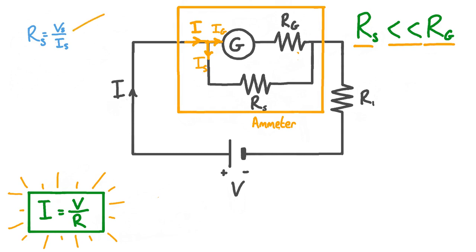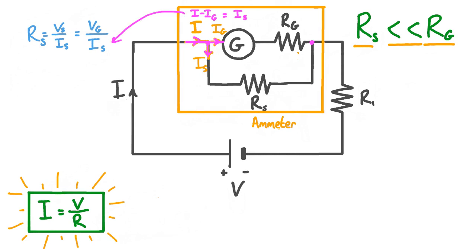Now we can make some substitutions to make this expression more useful. Firstly, the voltage across the shunt resistor Vs is the same as the voltage applied across the galvanometer Vg, because the two parallel branches are connected to the rest of the circuit at the same points — there's a fixed potential difference between these two points. So we can replace Vs with Vg. Secondly, because the incoming current I is split into two parts Ig and Is, we can say I equals Ig plus Is. Subtracting Ig from both sides gives Is equals I minus Ig, and substituting this in gives Rs equals Vg over (I minus Ig).